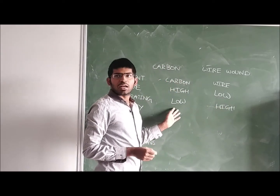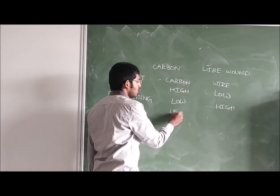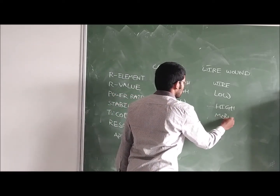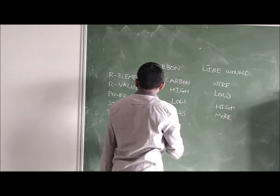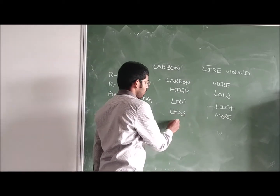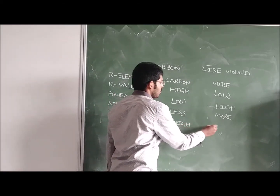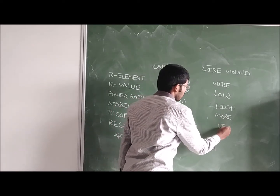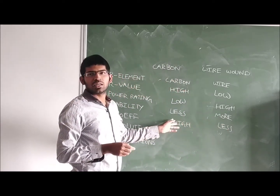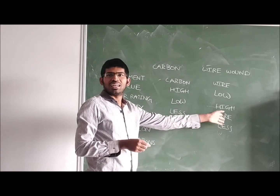Stability: the carbon potentiometer is less stable, while the wire wound potentiometer is more stable. The temperature coefficient of the carbon potentiometer is high because its resistance changes easily with temperature. The temperature coefficient of the wire wound potentiometer is less.